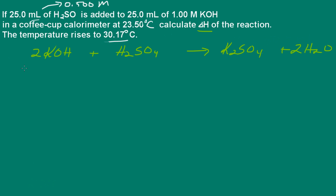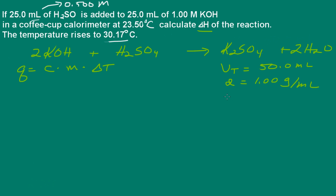Now, the first thing I'm going to have to do is find the heat that's released. We know it's released because the temperature rises, so heat is released into the calorimeter. Q is going to be equal to the heat capacity of the solution times the mass of the solution times delta T. We have to make a couple of assumptions: the total volume is the sum of the volumes — 25 and 25, which is 50 milliliters. Next, we assume that the density of the solution is the same as water, and the specific heat capacity of the solution is the same as that of water.